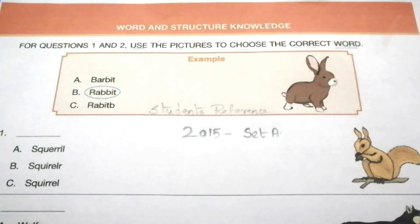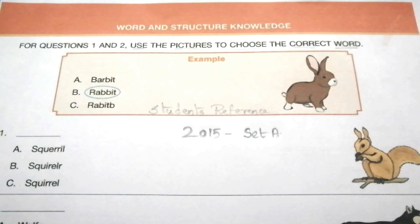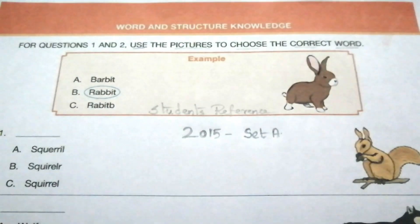Hey students, welcome to Students Reference. If you are new to this channel, please subscribe and click the bell icon to get notifications for upcoming videos. Today we are going to discuss the 2015 IEO question paper for Class 2 students. I have already uploaded other IEO, NSO and IMO question papers for Class 2 students — go to the playlist and click Olympiad Class 2 to get these papers. Today's first topic is Word and Structure Knowledge.